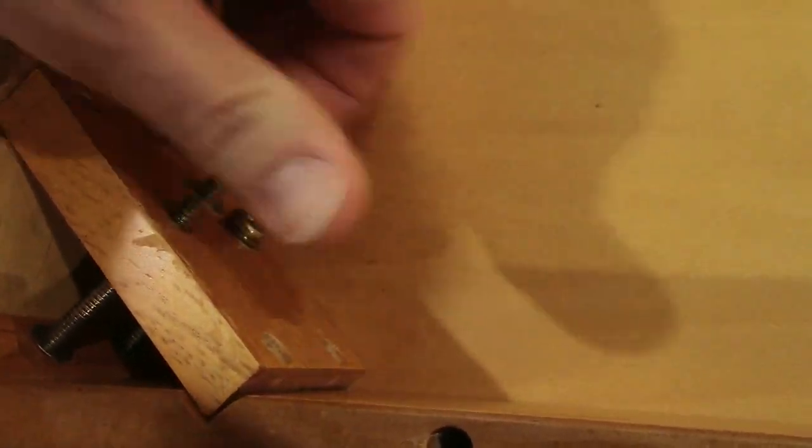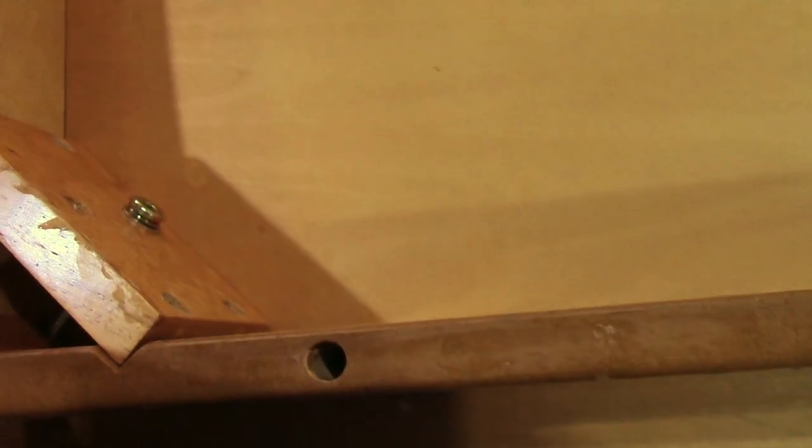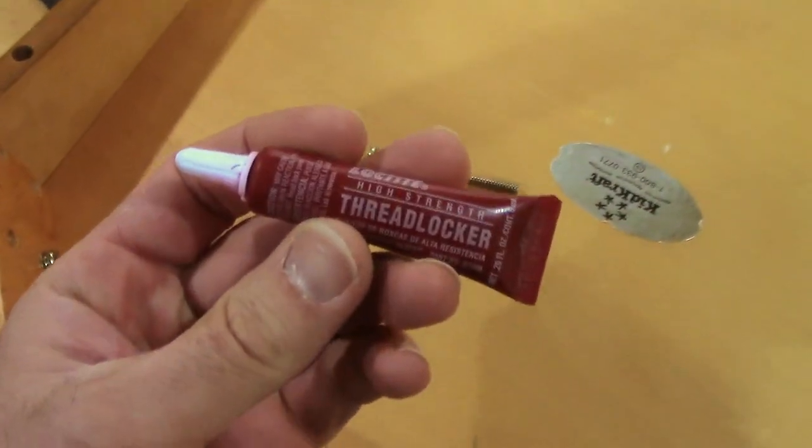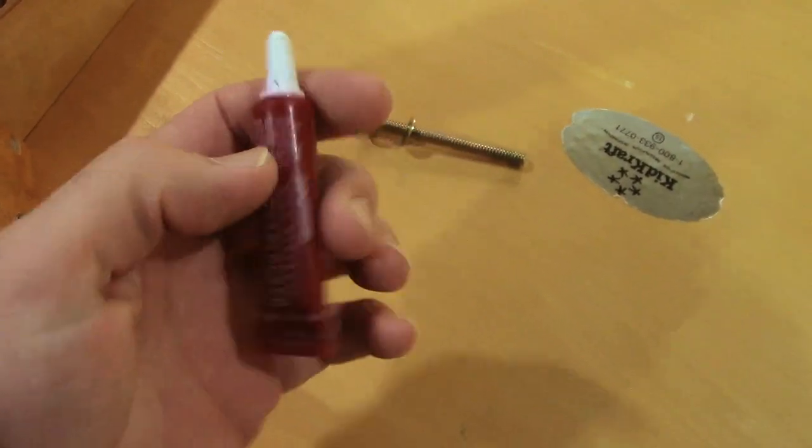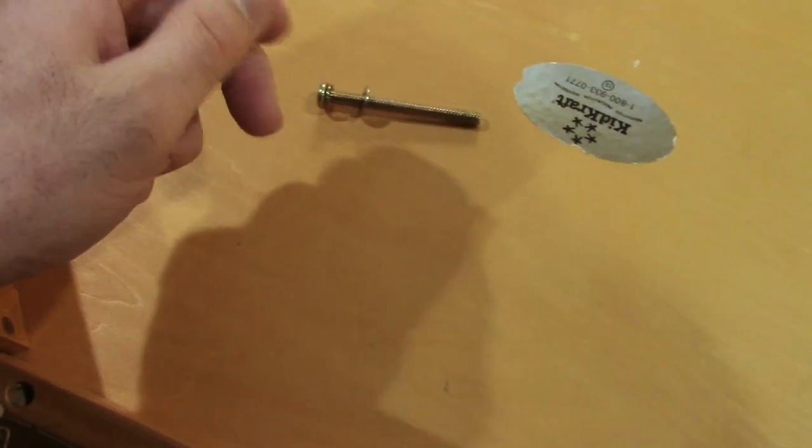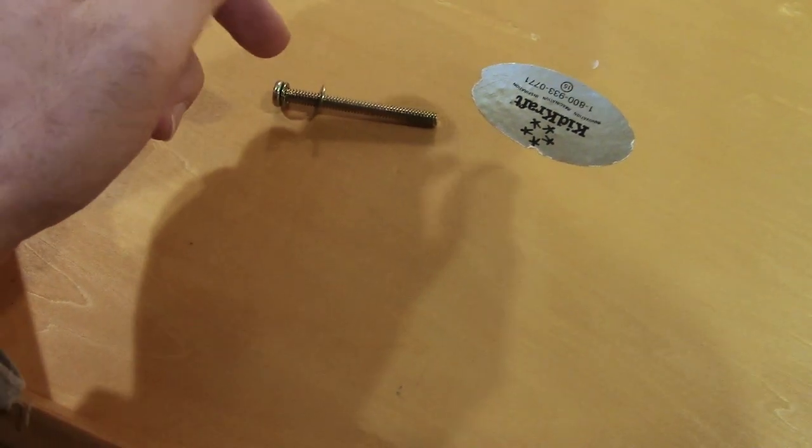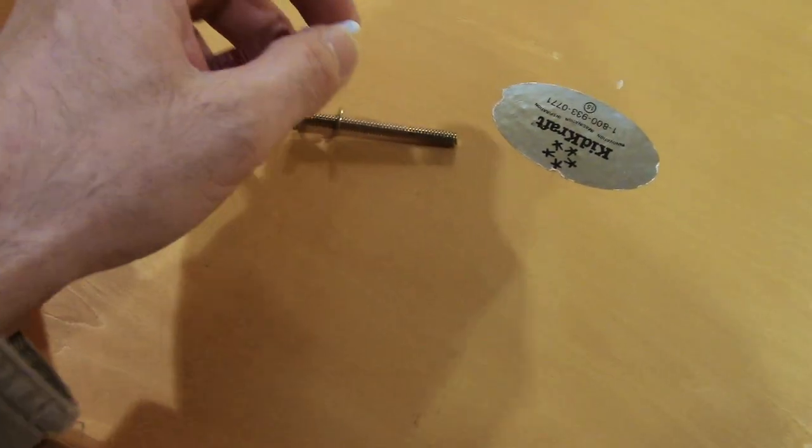So, what you do is get some of this, called Thread Locker from Loctite, and it's runny, so you don't need too much.